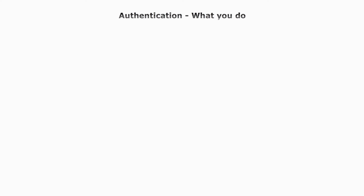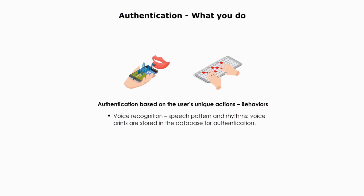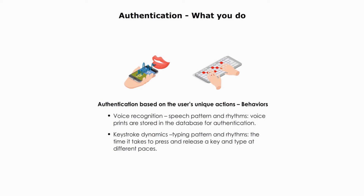What you do — behaviors. The fourth authentication factor is based on the user's unique actions: behaviors. For example, voice recognition, speech pattern, and rhythms. Voice is unique to an individual and cannot be duplicated. Sometimes voice is considered a form of biometrics. Keystroke dynamics refers to typing rhythm and patterns — the time it takes to press and release a key and type at different paces.